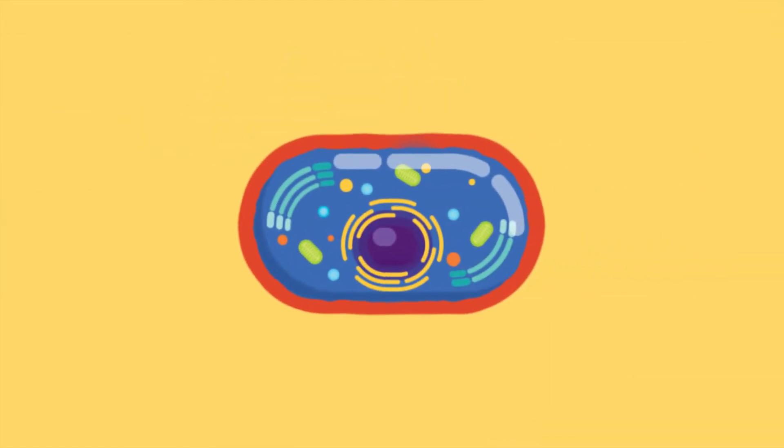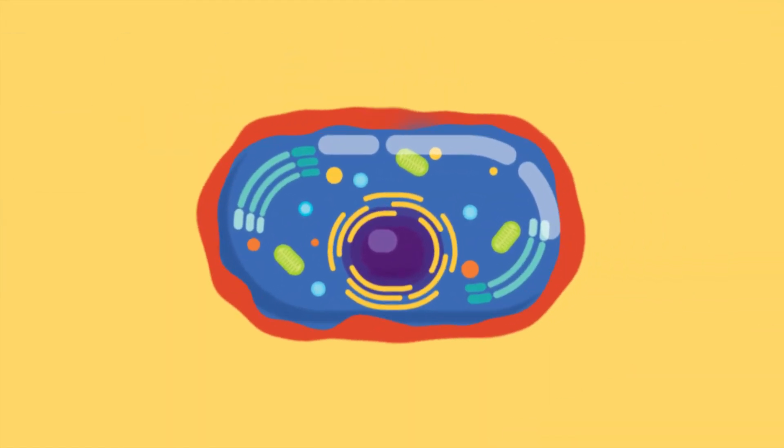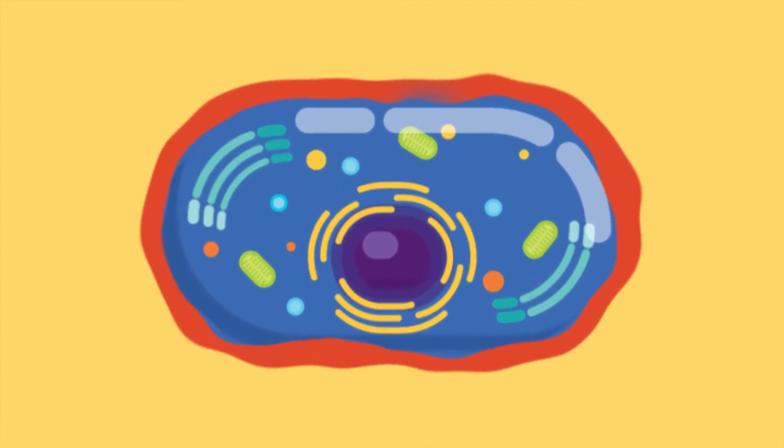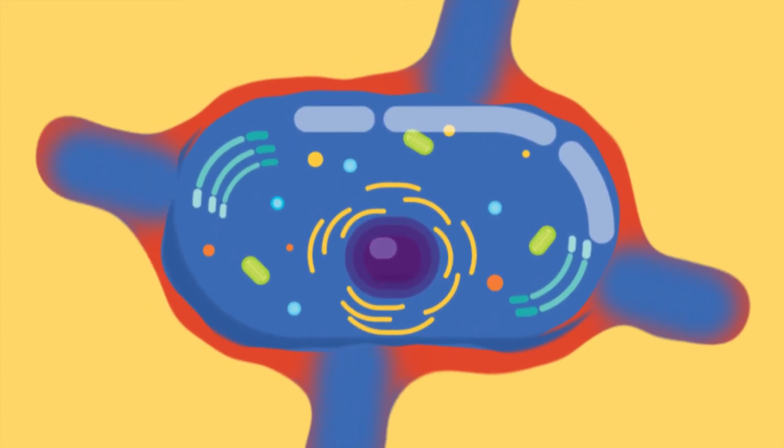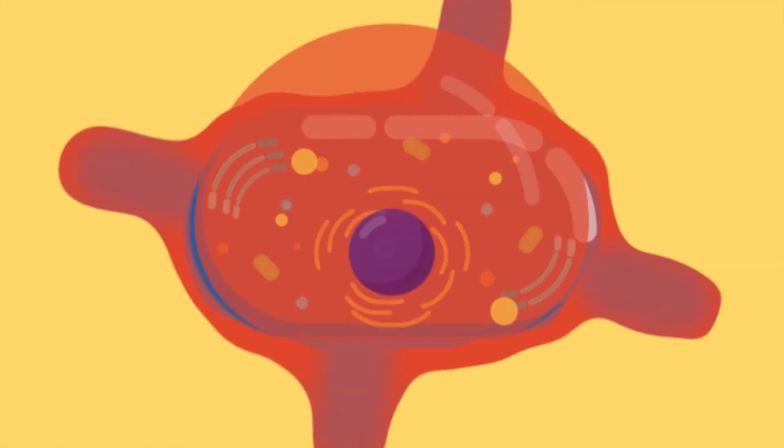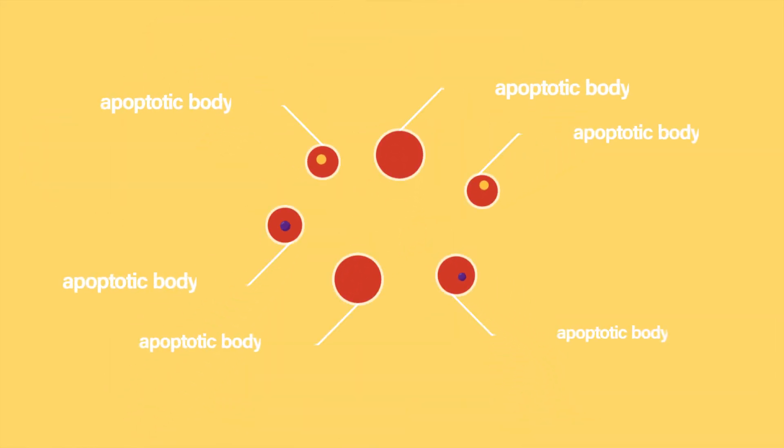In apoptosis, there is no disintegration of the cell membrane or wall, rather there is a shrinkage of cellular contents along with clumping of the membrane. This leads to formation of condensed bodies known as apoptotic bodies.